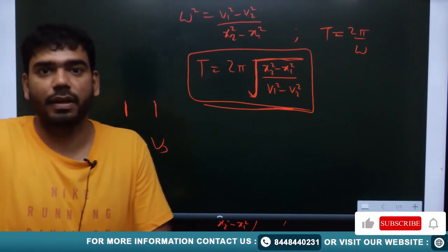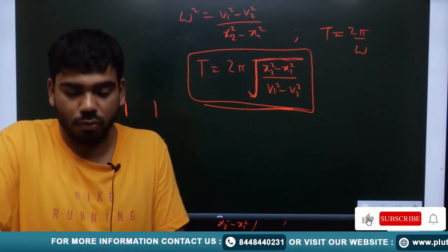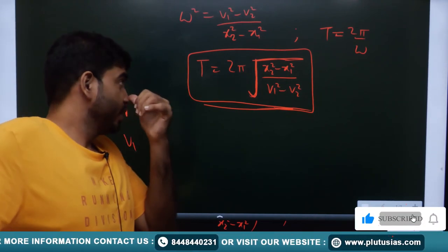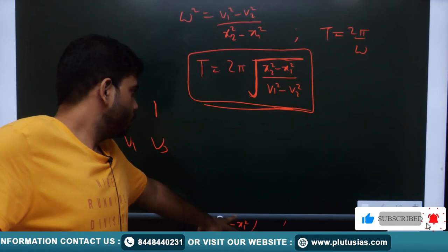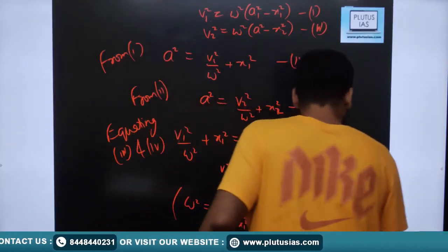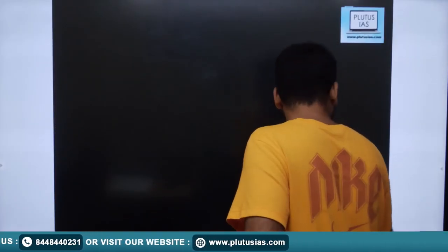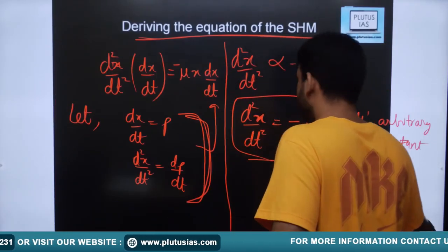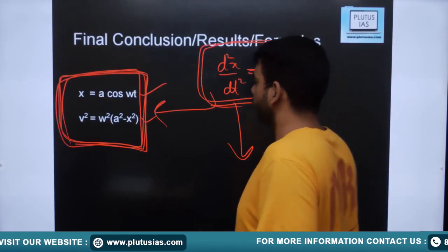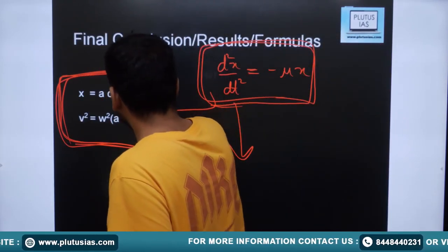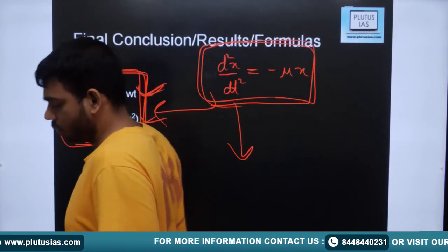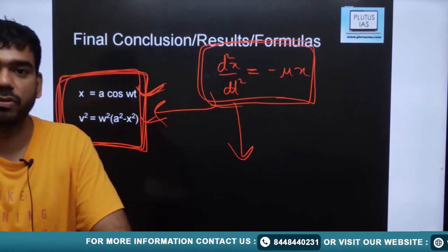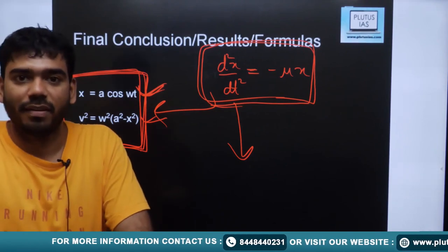To summarize, there are only two basic equations required for any SHM question: the velocity-position relation v² = ω²(a² − x²), and the position-time relation x = a·cos(ωt). Remember these two equations and any question of Simple Harmonic Motion from civil services Mathematics Optional can be solved. Thank you.